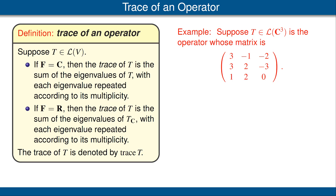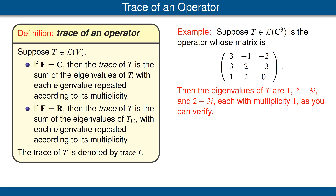Let's look at an example. Suppose T is the operator on C³ whose matrix with respect to the standard basis is the matrix shown here. We've shown previously that the eigenvalues of this operator T are 1, 2 plus 3i, and 2 minus 3i, each with multiplicity 1. Thus the trace of T is the sum of those three eigenvalues, which is equal to 5.